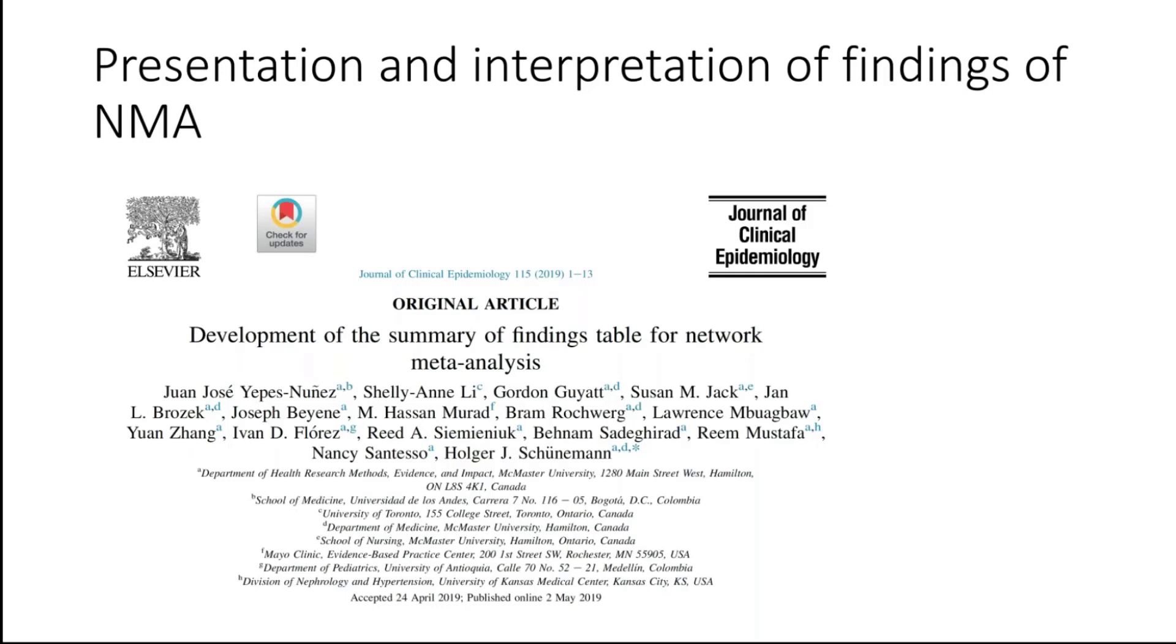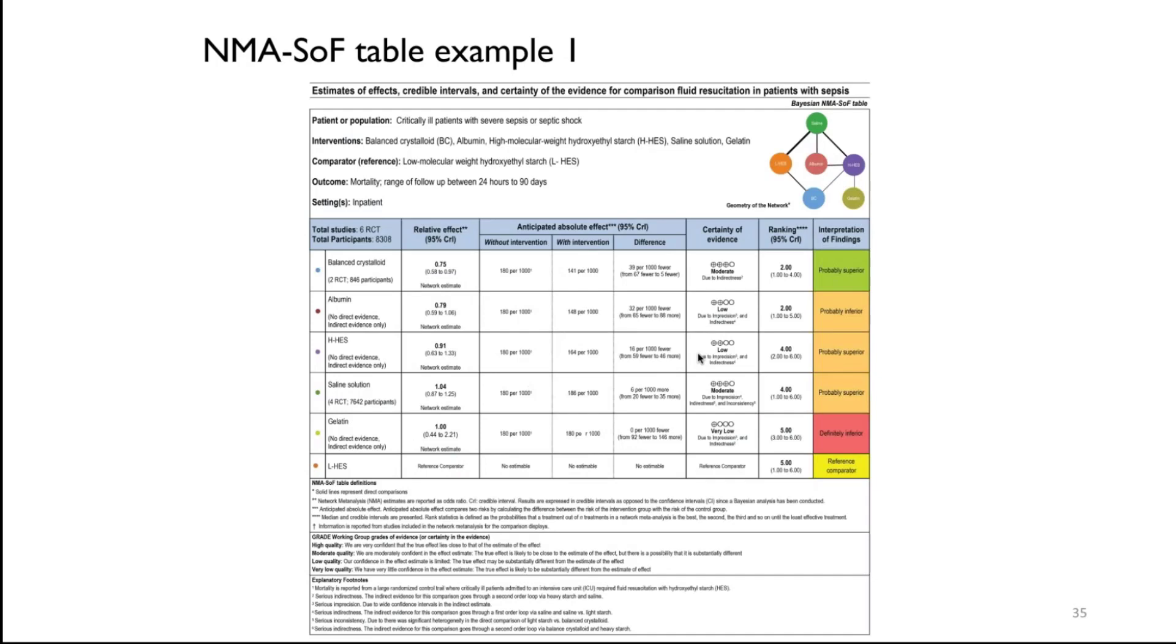And then talk about interpretation of the findings from network meta-analysis, work that Romina has led and that many of us had input on. That is work that is still under final development, and input and feedback on that will be very much appreciated. Final development here meaning that at least from the GRADE working group point of view, the approach I will be presenting has been approved but it's not published in its final format yet. So I will take it from here and start with the second part which is the summary of findings tables for network meta-analysis.